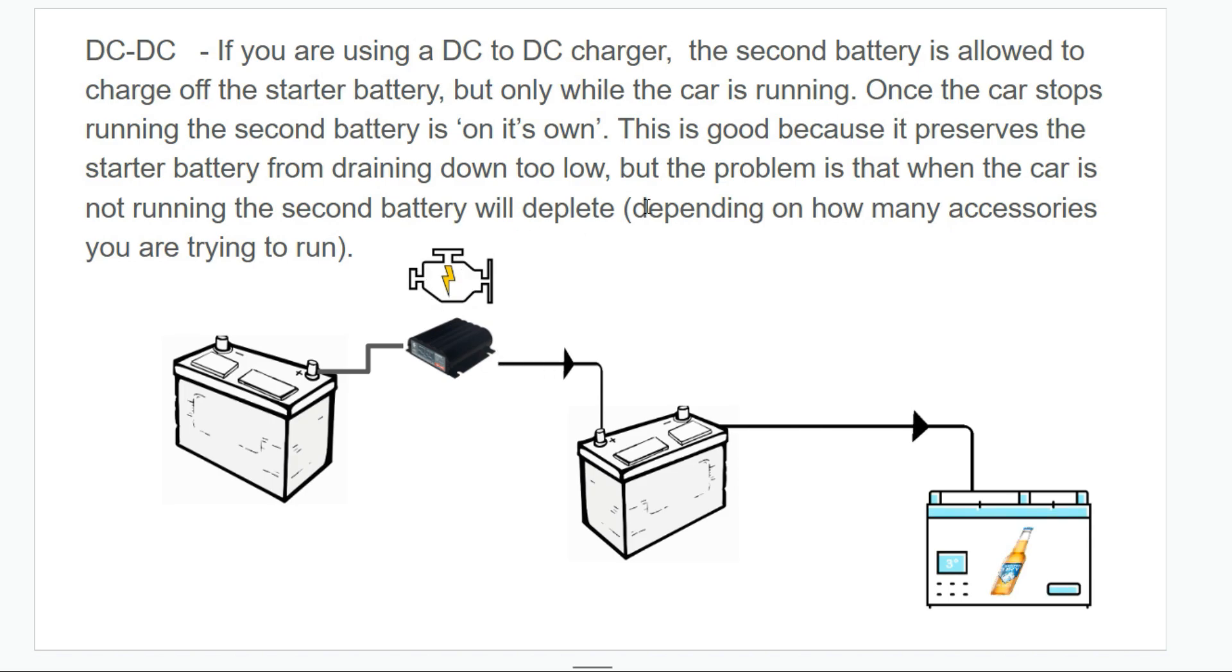If you're using a DC to DC charger, the second battery is allowed to charge off the starter battery but only while the car is running. Once the car stops running, the second battery is on its own. This is good because it preserves the starter battery from draining down too low, but the problem is that when the car is not running the second battery can deplete depending on how many accessories you're trying to run off it.